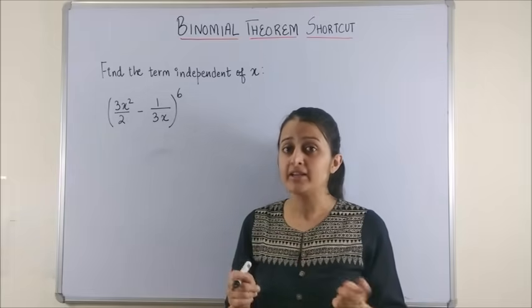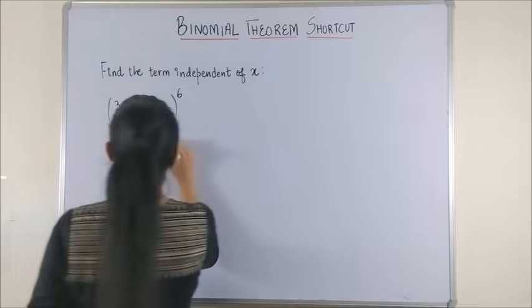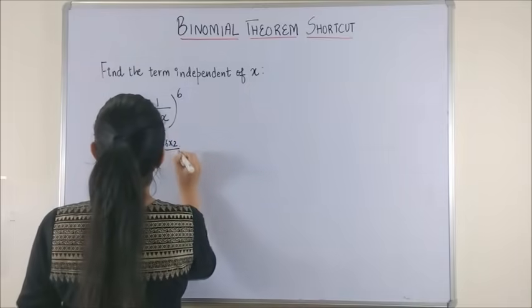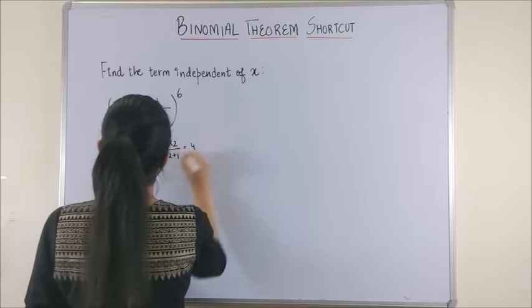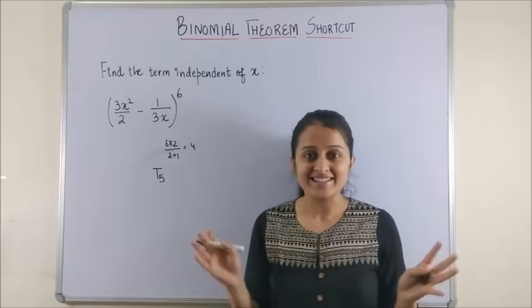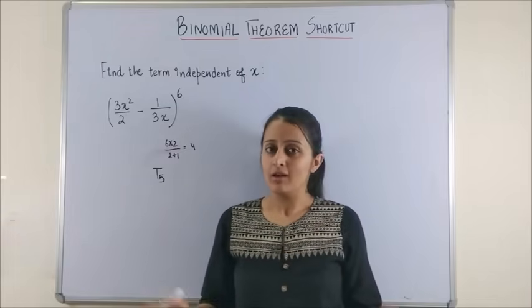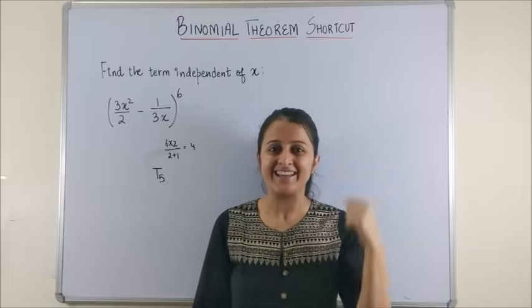The term independent of x in this question would be the fifth term. Yes, it is that quick. You want to know how? Well, yeh toh mere bai haat ka khel hai. Let's check out the formula.